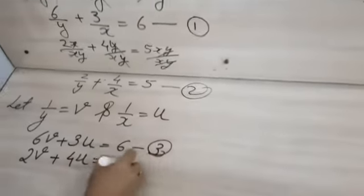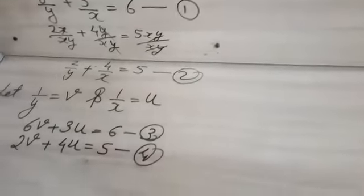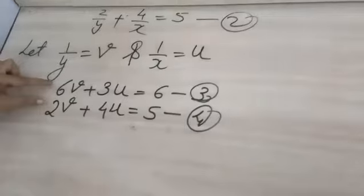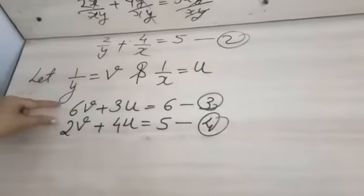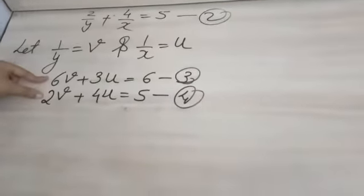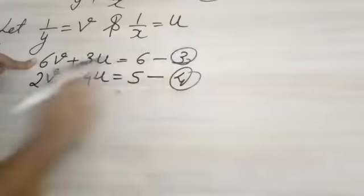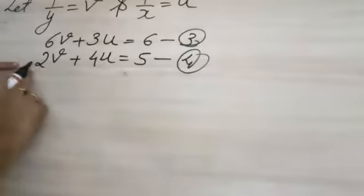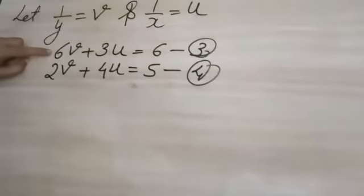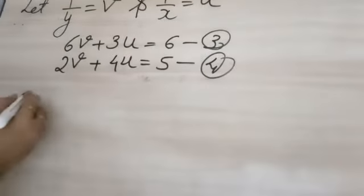These are the required equations which we have to solve. Now if you observe properly, some coefficients are not equal. We will make v coefficients equal, so equation 3 we will multiply by 2, and equation 4 we will multiply by 6.